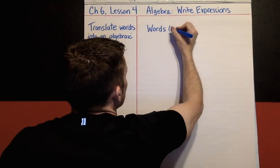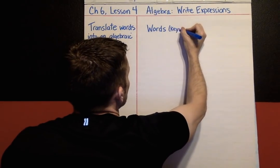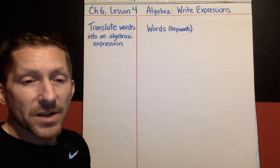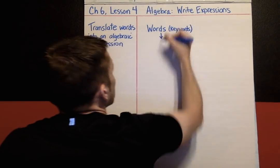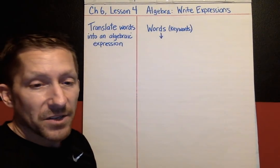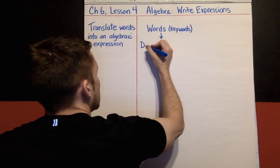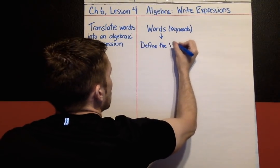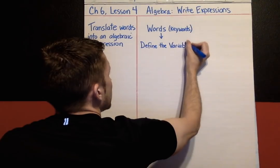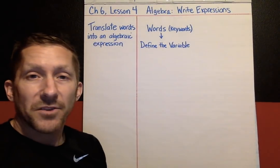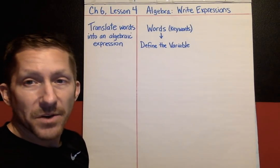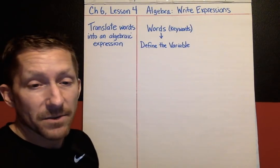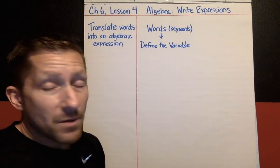We're going to start with words describing a situation — something that could be happening in real life — and we're going to be looking for keywords. There are always going to be some keywords that tell us what to do in mathematics. From there, we're going to take the words and the situation and define the variable: what are we trying to find, or what in the situation is varying? It's the amount that we don't know.